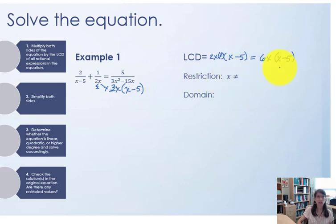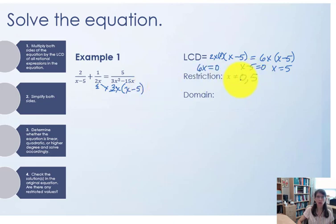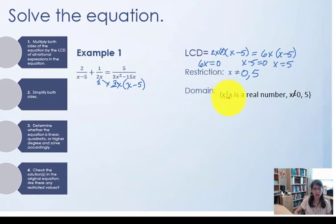To find restrictions on the variable we set each factor equal to 0. Setting 6x equal to 0 gives x equals 0, and setting (x minus 5) equal to 0 gives x equals 5. So both 0 and 5 must be eliminated from possible solutions. Our domain is the set of all real x such that x cannot equal 0 or 5. If any solutions are 0 or 5 they would need to be eliminated.